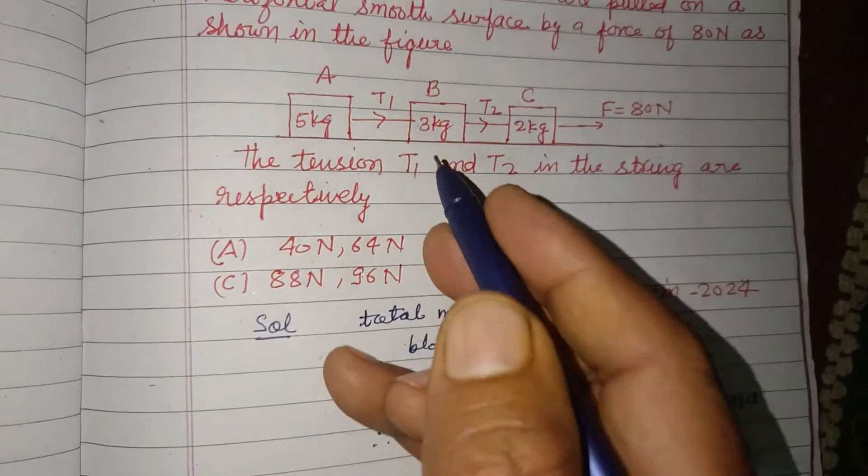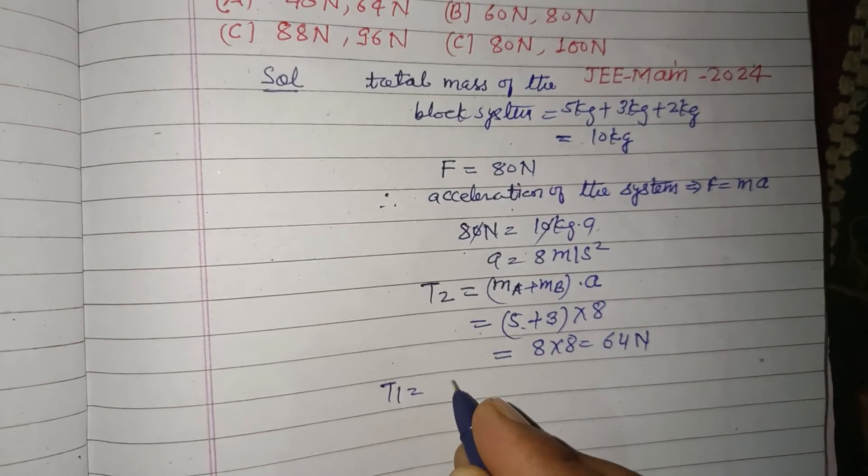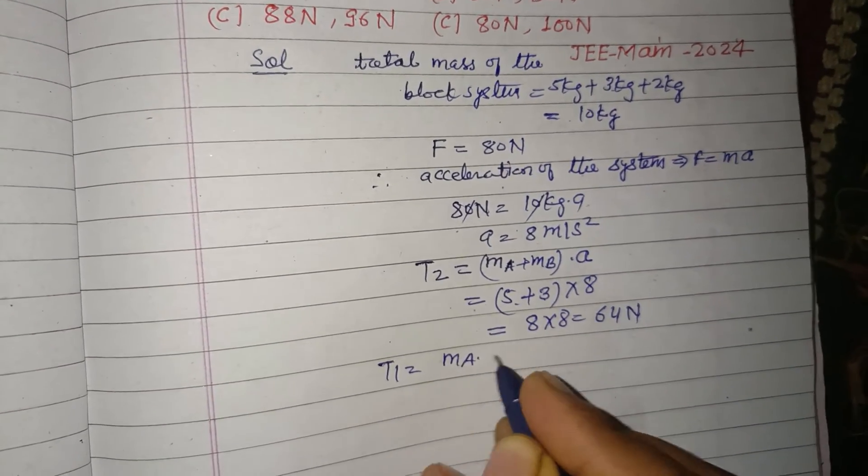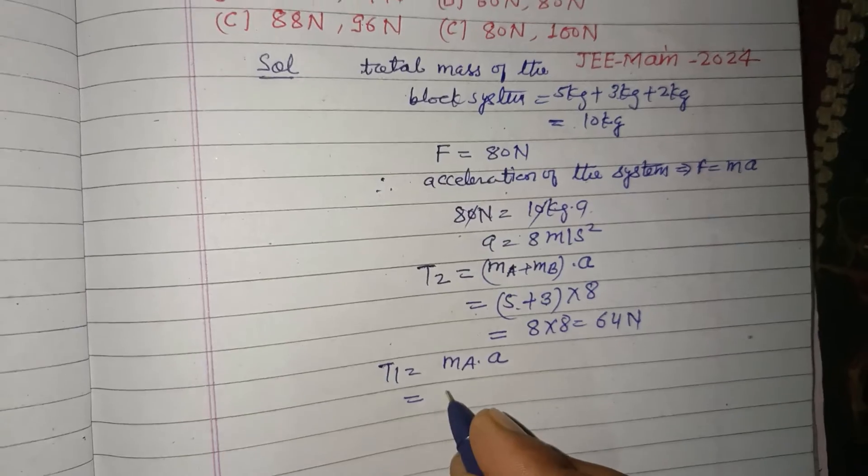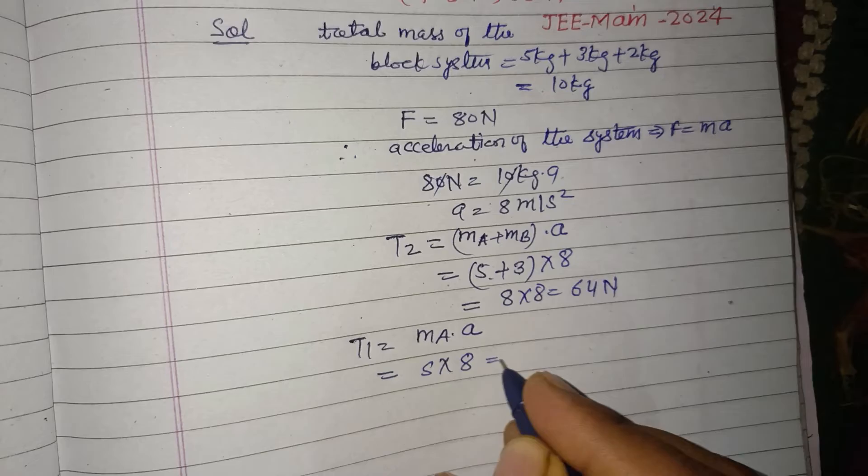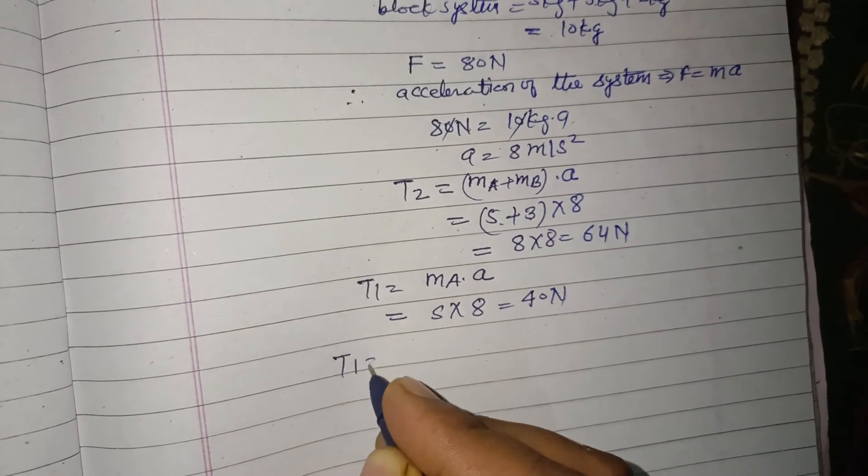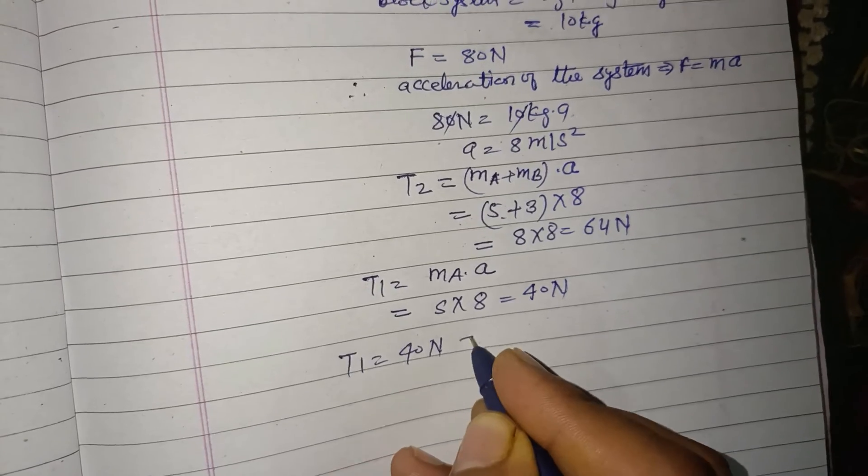Okay, and T1 is due to only this block A. So T1 equals MA into A. MA is 5 kg into A is 8, so this is 40 Newton. Therefore T1 equals 40 Newton and...